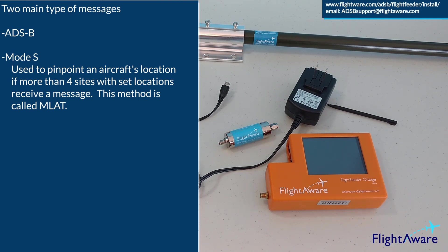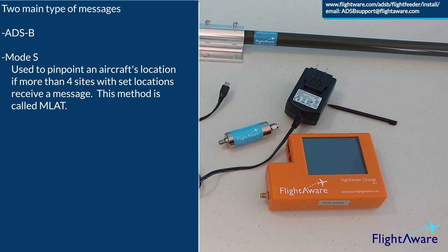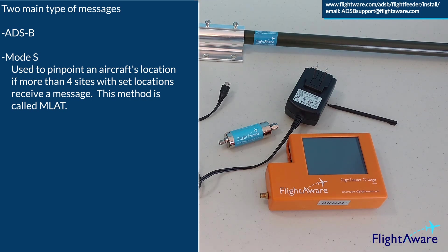ADS-B messages include most of the information needed to track an aircraft, like location, tail number, direction, and speed. Mode S messages, on the other hand, don't include location, so if your station sends a message to FlightAware about a particular aircraft, FlightAware will look for other stations nearby that also send a message about that aircraft, and if four or more stations send a message to FlightAware, the location of that aircraft can be pinpointed.